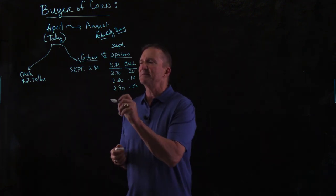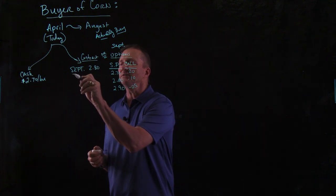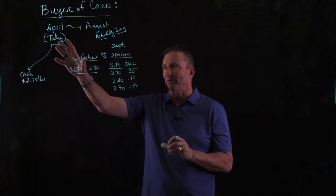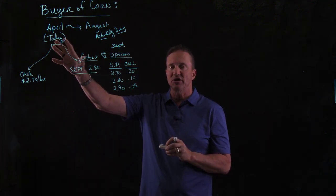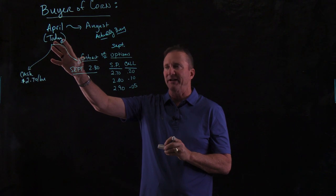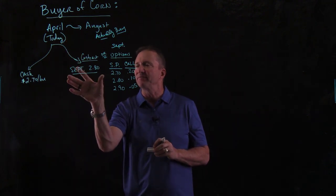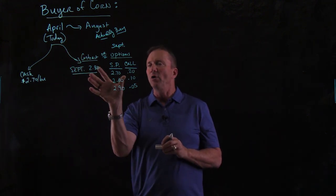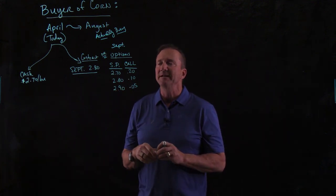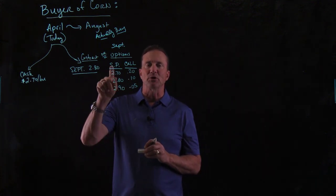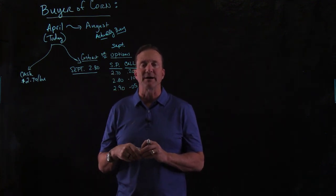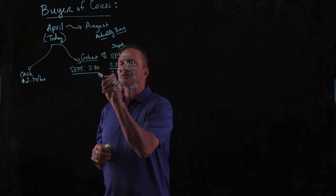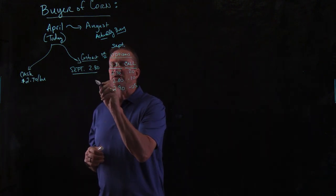This September contract is at $2.80 in April. We're all talking about April right now. So in April, you could buy a futures contract for $2.80, or you could buy the options. These options are broken up by strike price, and I have some new terms for you. Let's start out at $2.80.